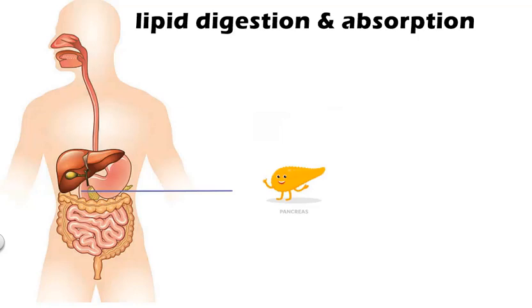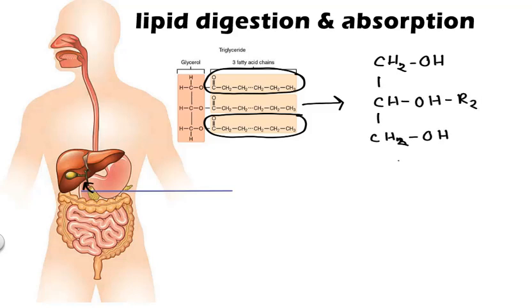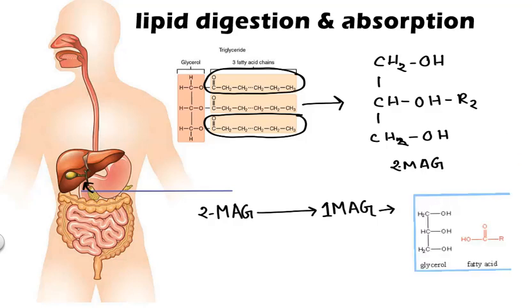Now that they are emulsified, enzymes can effectively work on them. Pancreatic lipase breaks down the triacylglycerol with the help of colipase. Triacylglycerol removes fatty acid from first and third carbon of triacylglycerol and produces two monoacylglycerol. Two monoacylglycerol can be further broken down but some of the two monoacylglycerol are isomerized into one monoacylglycerol.